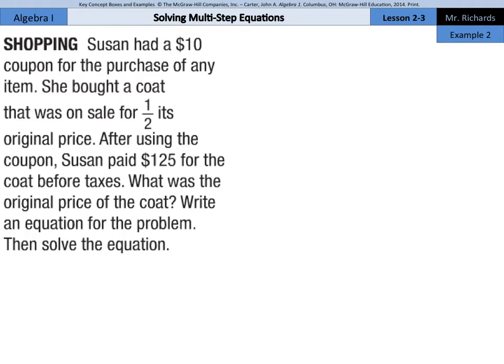Susan had a $10 coupon for the purchase of any item. She bought a coat that was on sale for one half its original price. After using the coupon, Susan paid $125 for the coat before taxes. What was the original price of the coat? Write an equation for the problem, then solve the equation.